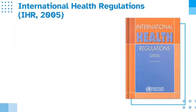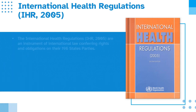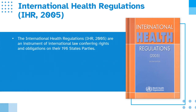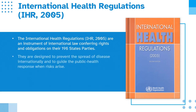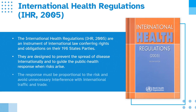What are the International Health Regulations? The International Health Regulations, IHR 2005 version, are an instrument of international law conferring rights and obligations on their 196 states parties. They are designed to prevent the spread of disease internationally and to guide the public health response when risks arise. The response must be proportional to the risk and avoid unnecessary interference with international traffic and trade.